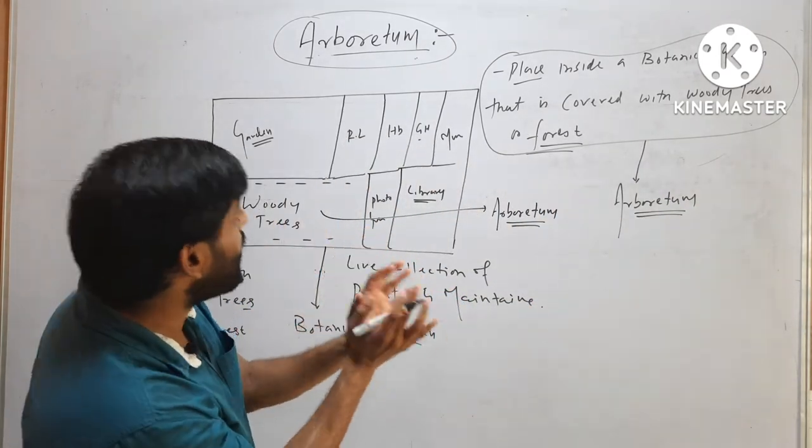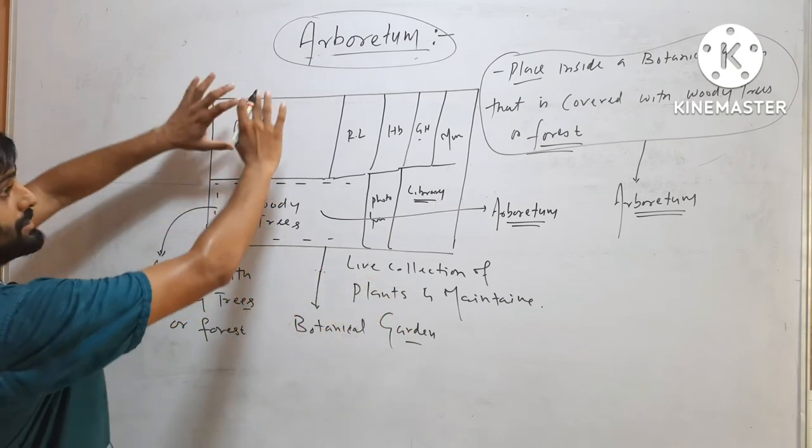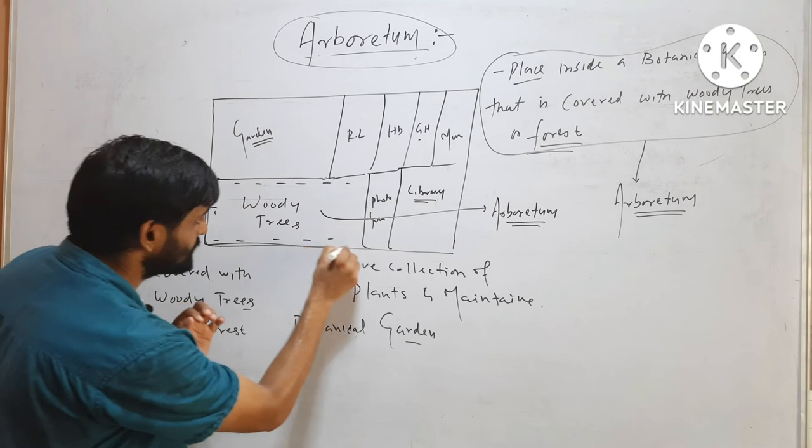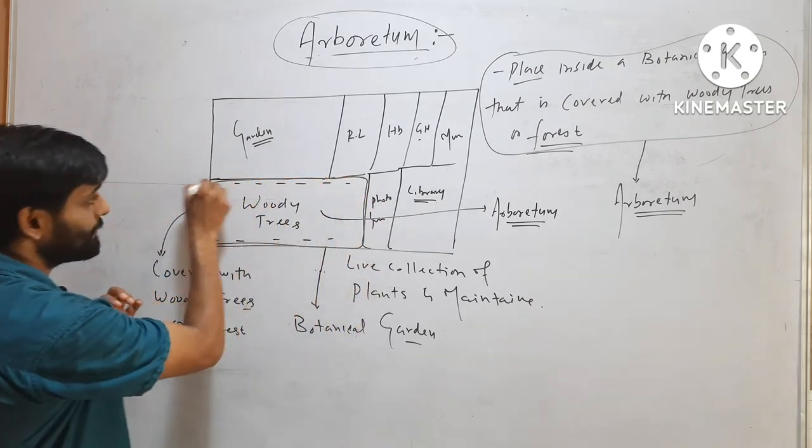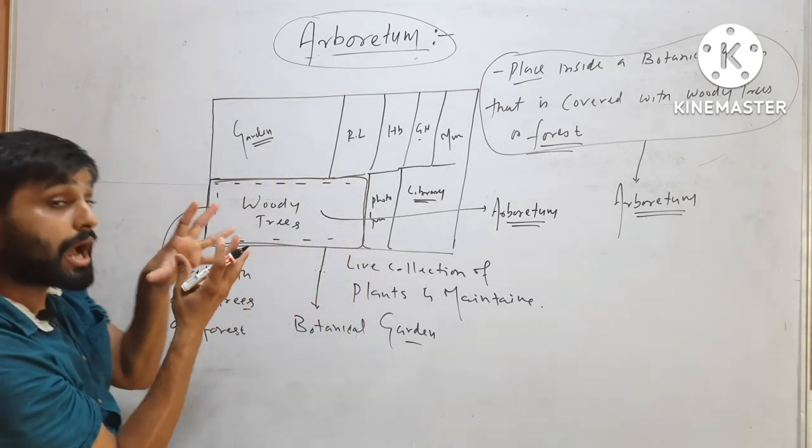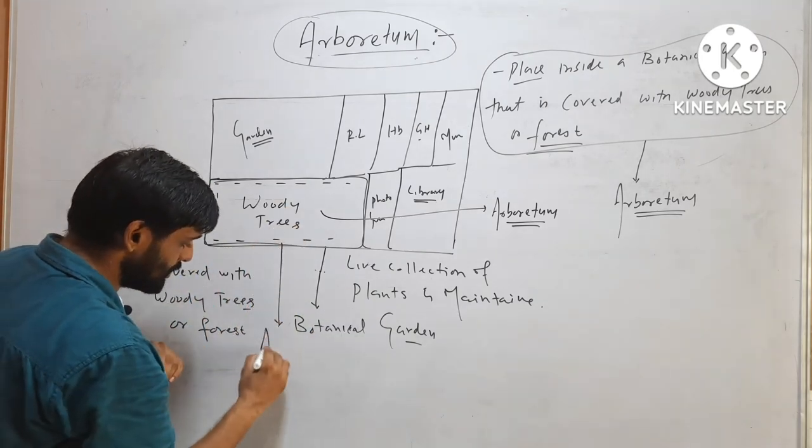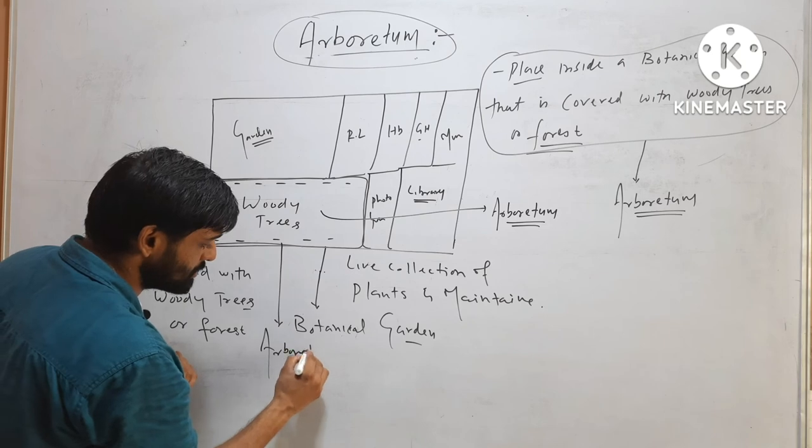Technically what is Arboretum? It is a part of that botanical garden. This is a botanical garden at this area. Now, in that area, large trees, woody trees are present. That area will be called Arboretum.